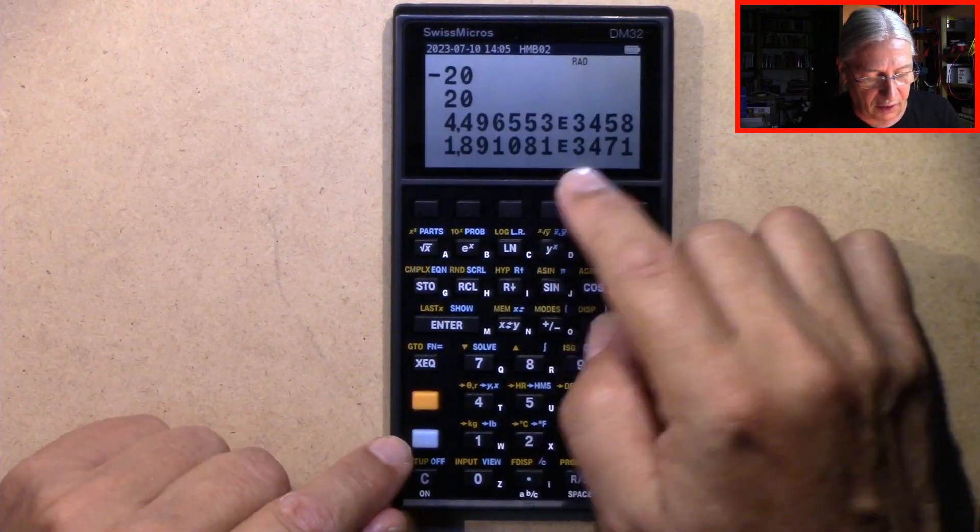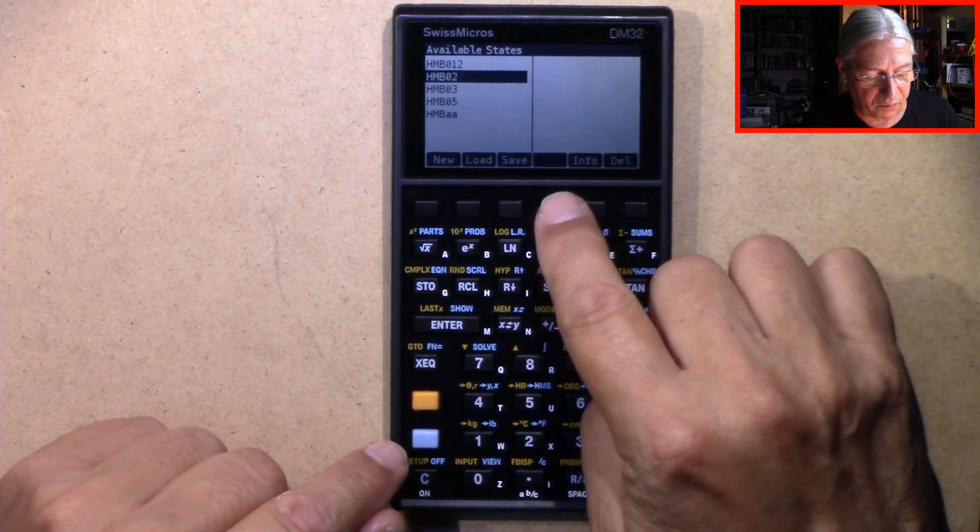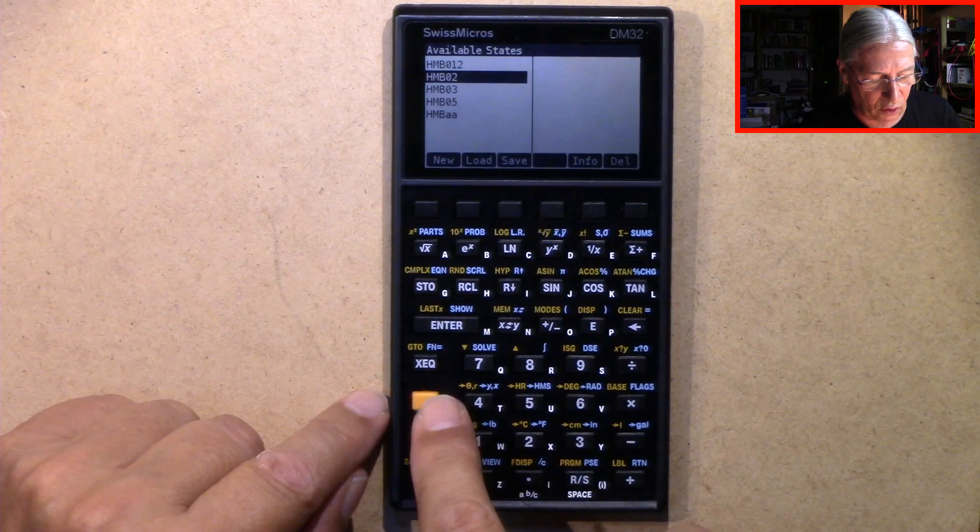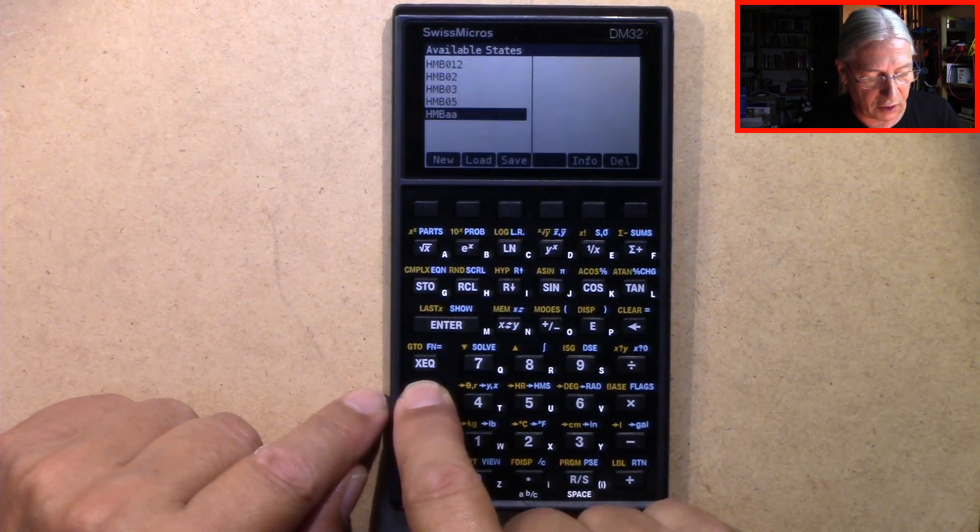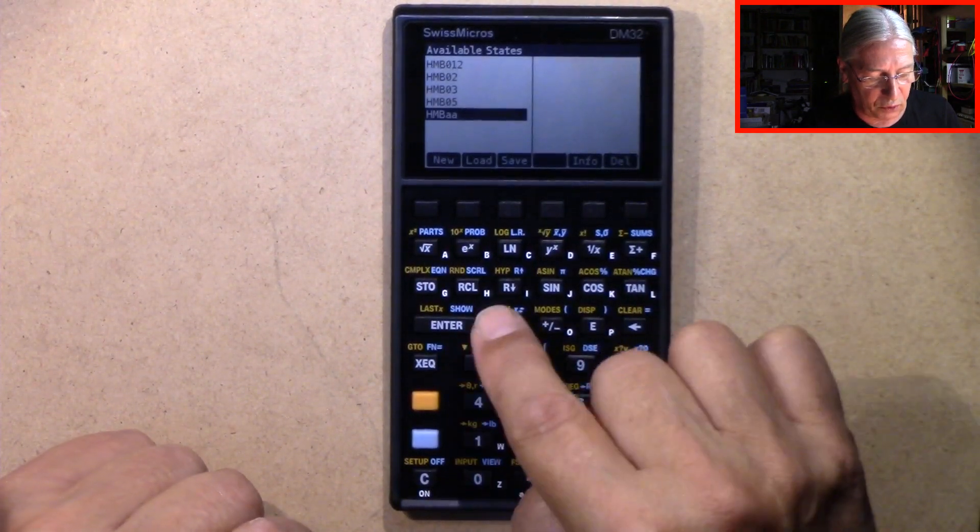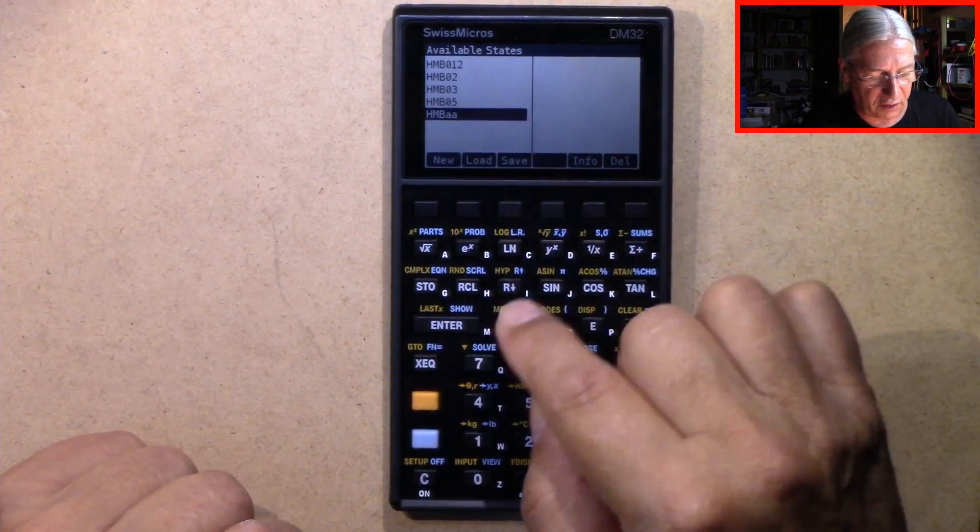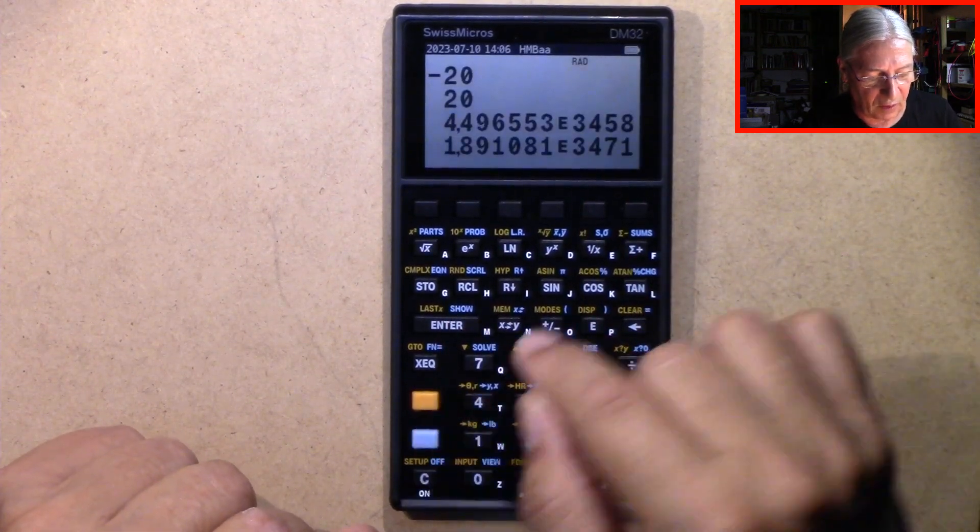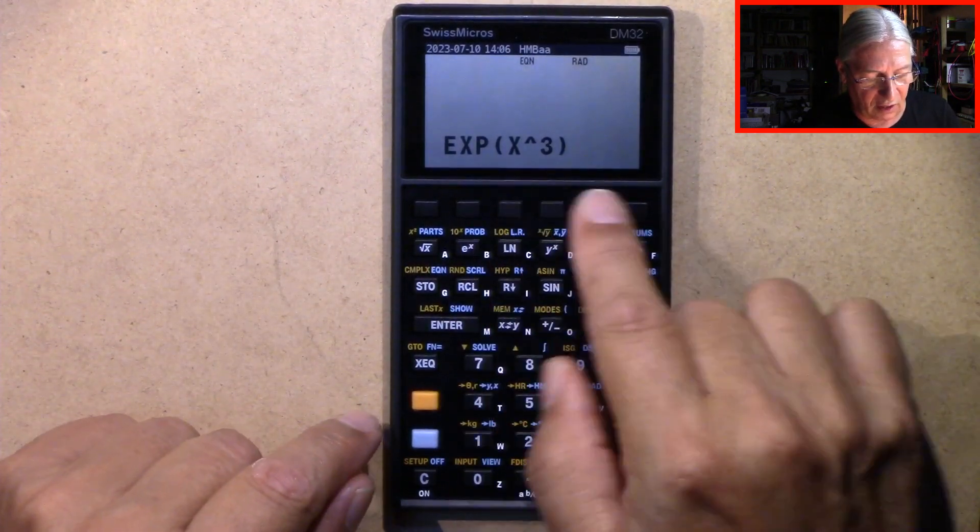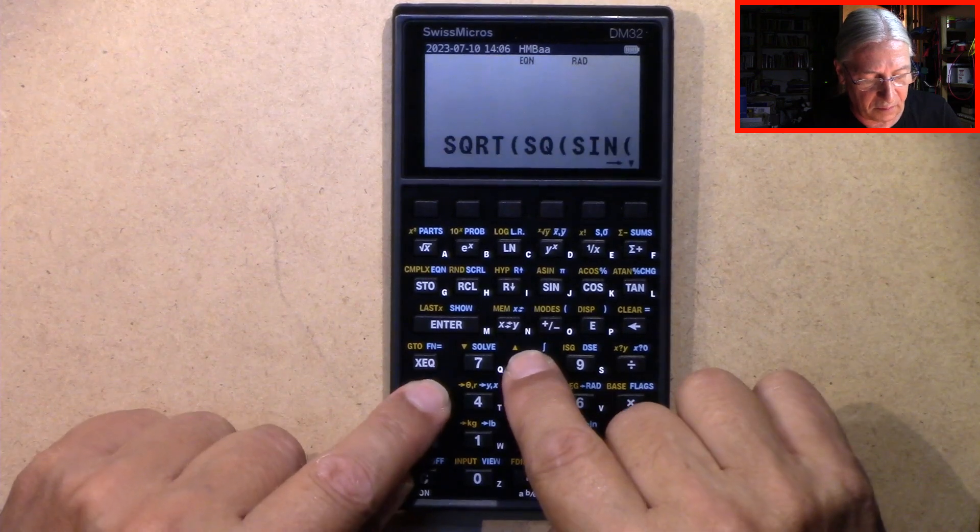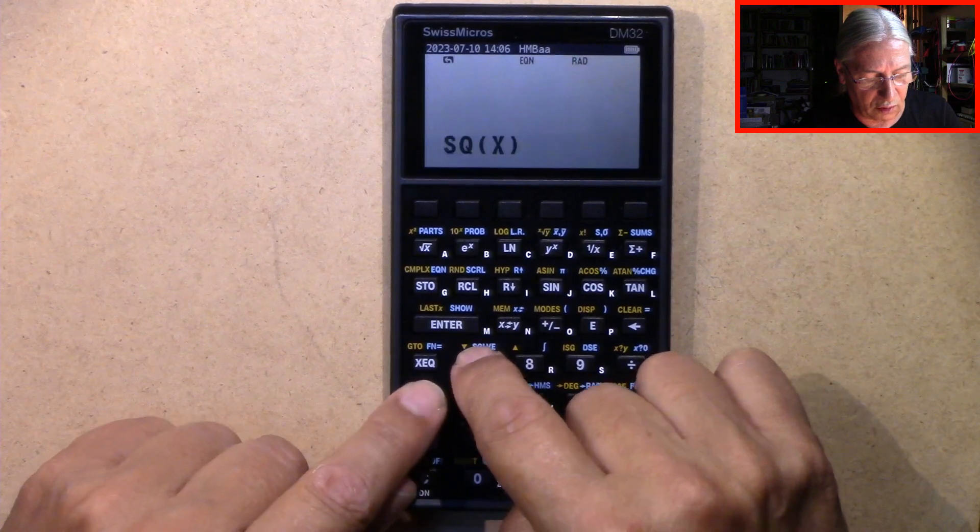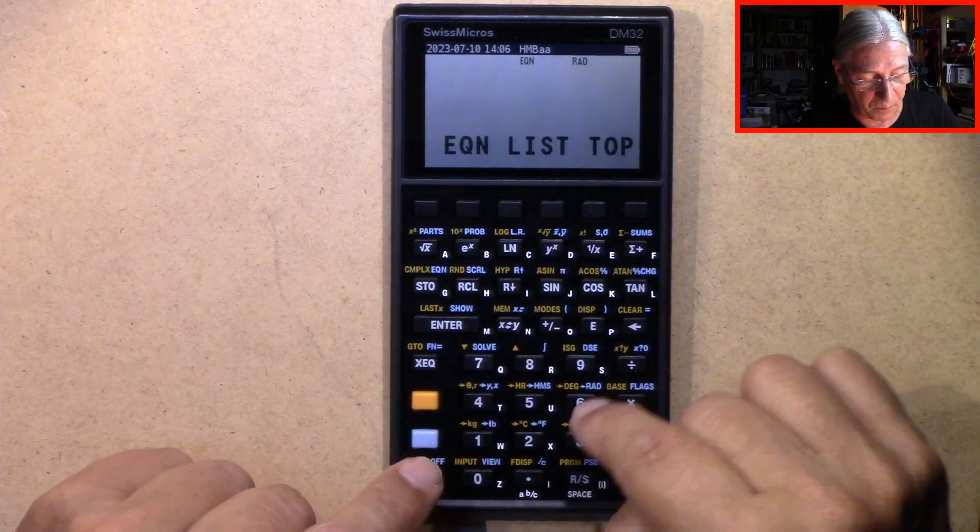Now I press F4 and with several clicks on the yellow button here I change to HMBAA. Now I have to press enter to activate this state, and I do so. When we now go back to our equations, we see we have a list which contains one, two, three equations. These were stored in this state.